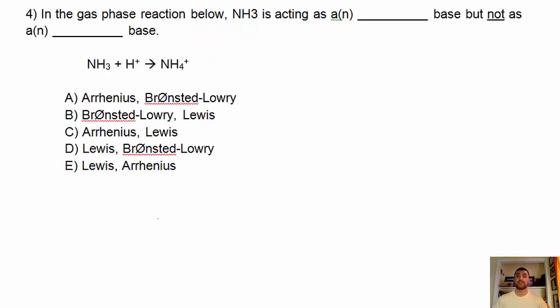All right, so in the gas phase reaction below, NH3 is acting as a blank base, but not as a blank base. We got definitions here. We got the Arrhenius definition for base gives an OH minus. We got the Bronsted-Lowry definition, which is a proton or an H+ acceptor. And we have the Lewis definition where it is an electron pair donor. So those are the three definitions.